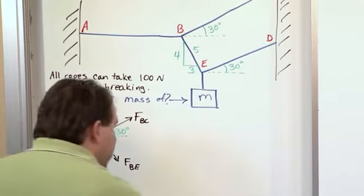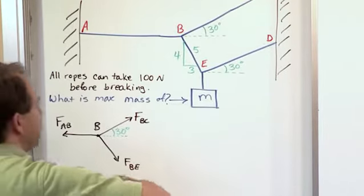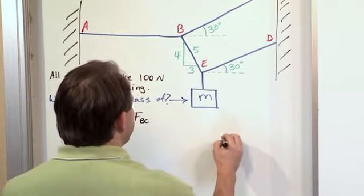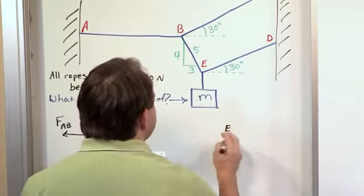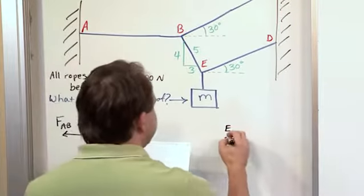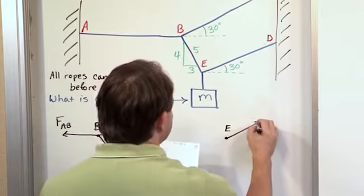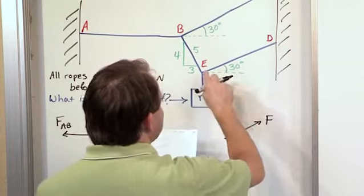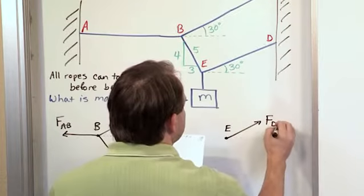Let's move over to the other one here and put a dot here and say that this is point E. Now looking from the point of view of point E, there's a tension that goes off in this direction. We'll call it FDE.